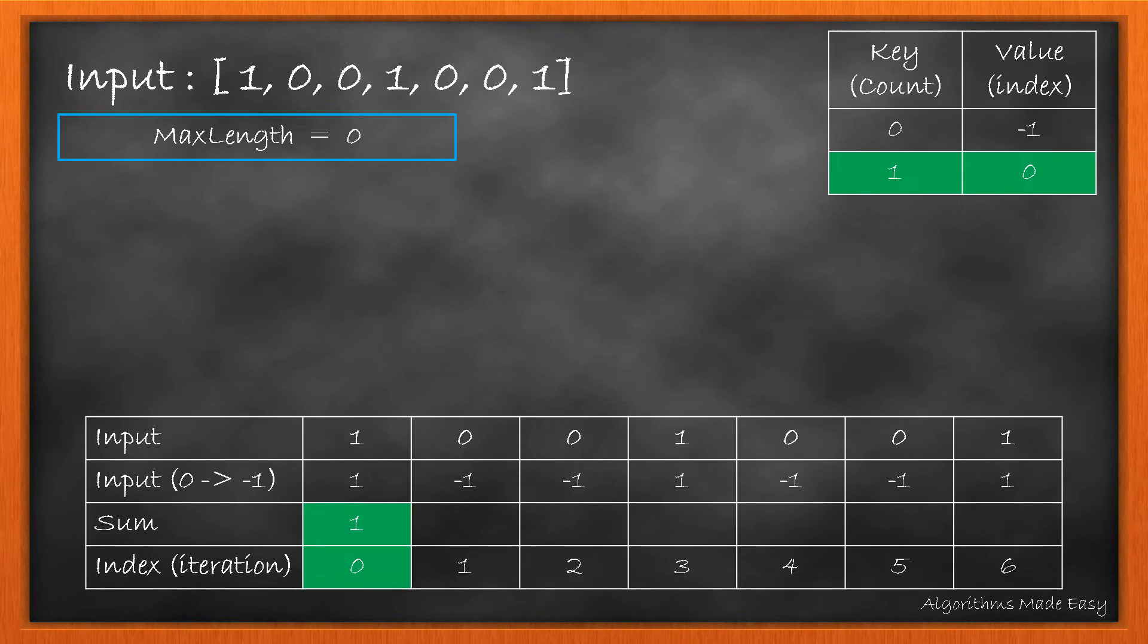For index 0, sum becomes 1. As there are no entries with key 1, i.e. the sum, we make an entry in the map.